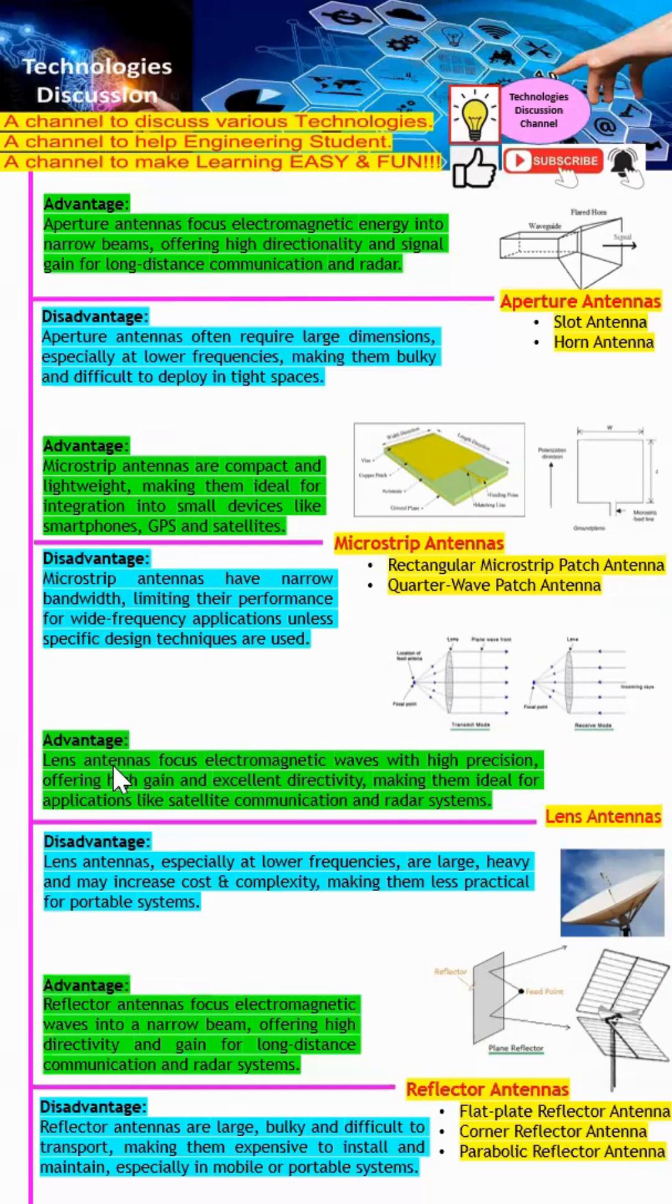Next will be lens antenna. Lens antennas focus electromagnetic waves with high precision, providing high gain and excellent directivity. However, lens antennas, especially at low frequencies, are very large and bulky.